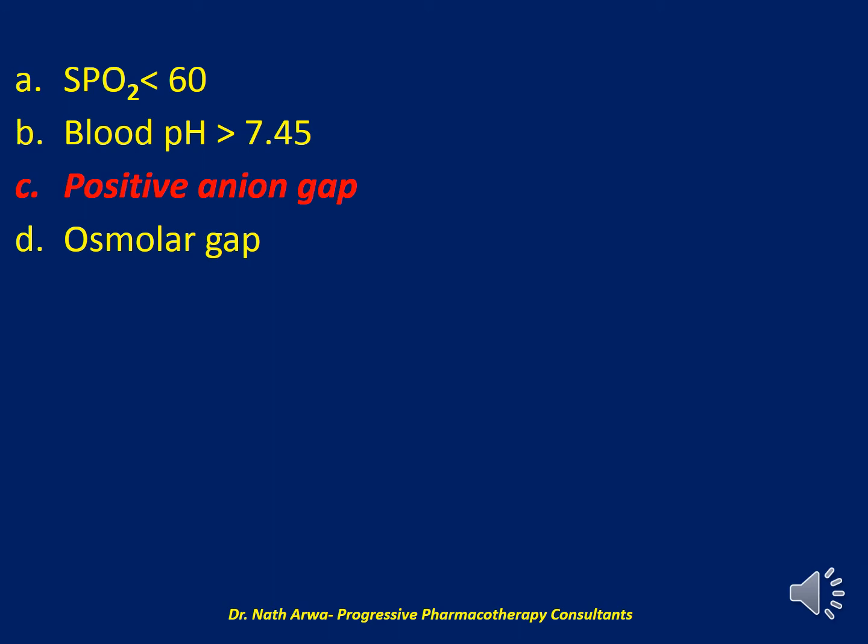C is the correct answer. Here we have a case of positive anion gap. Acute iron overdose can cause an anion gap metabolic acidosis through the disruption of oxidative phosphorylation, and it can also happen via liberation of three hydrogen ions when the ferric ion Fe3+ combines with water. Iron-induced oxidative damage to the GIT — the gastrointestinal tract epithelium — permits increased systemic iron absorption, and that can be very dangerous.